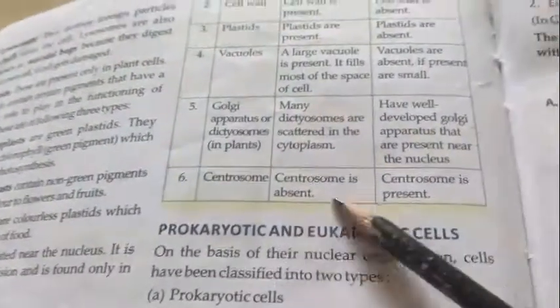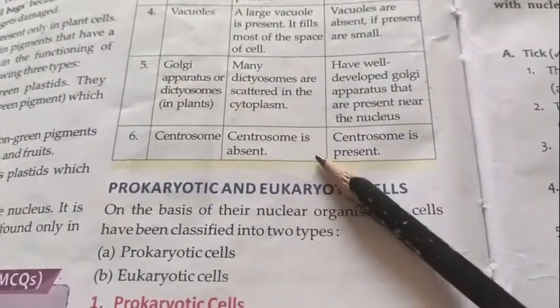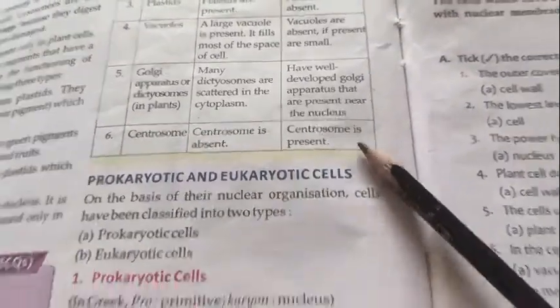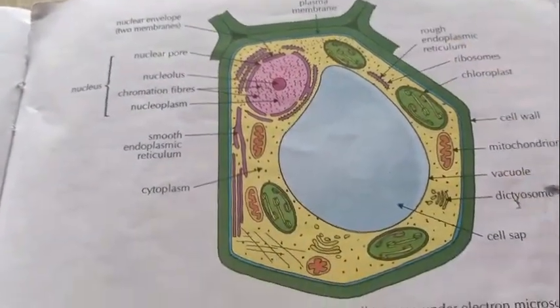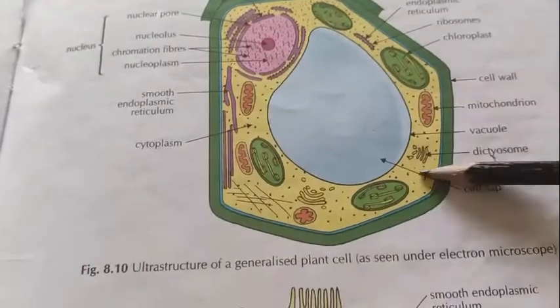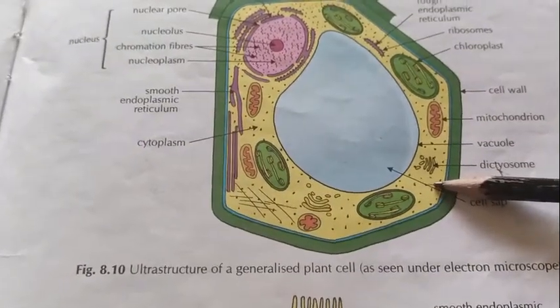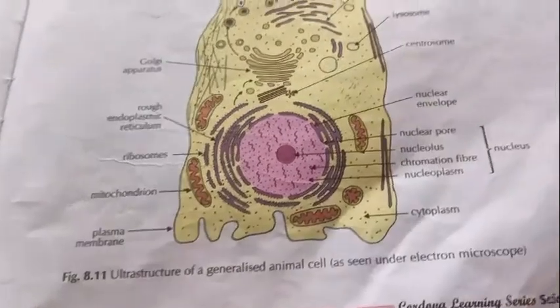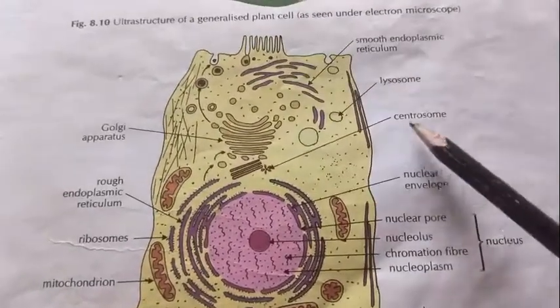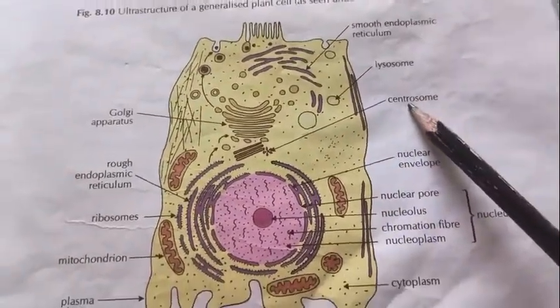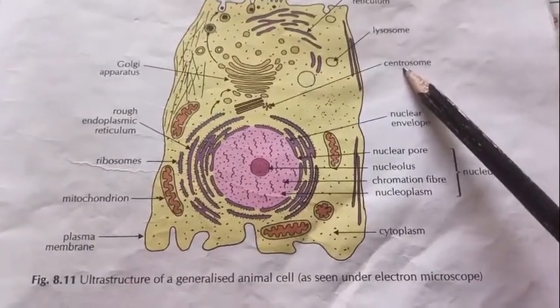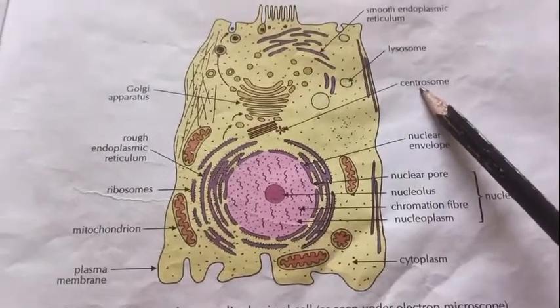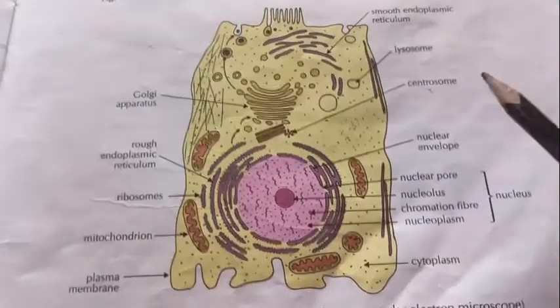The next point is centrosomes. The centrosome is absent in the plant cell and is present in the animal cell. You can see in the animal cell image — this is the centrosome, which is present only in the animal cell, and it is involved in cell division.